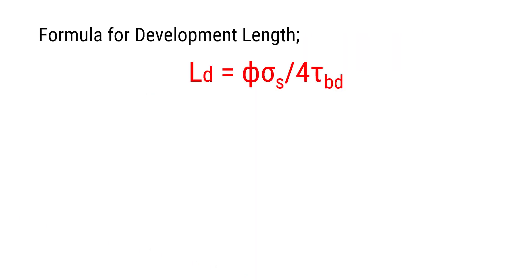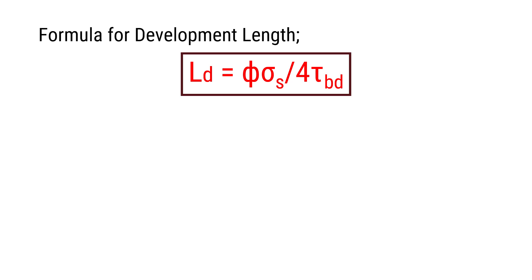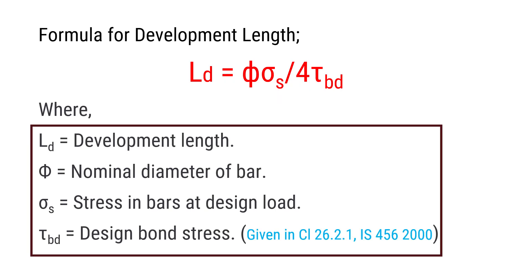The formula for development length LD is given by the equation: LD = (Phi × Sigma_S) / (4 × Tau_BD). Let's break it down. LD is the development length, Phi is the nominal diameter of the bar, Sigma_S is the stress in bars at design load, and Tau_BD is the design bond stress.